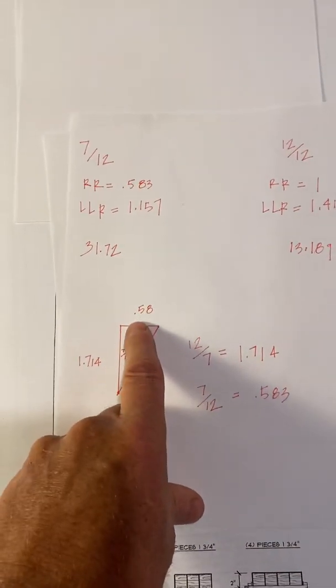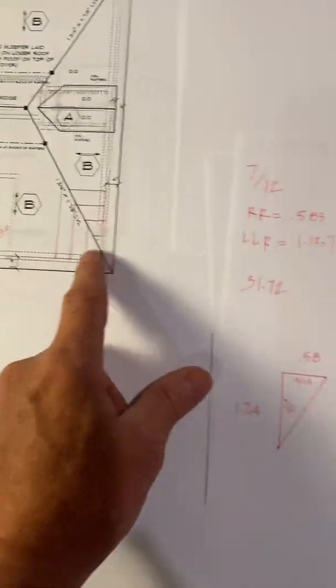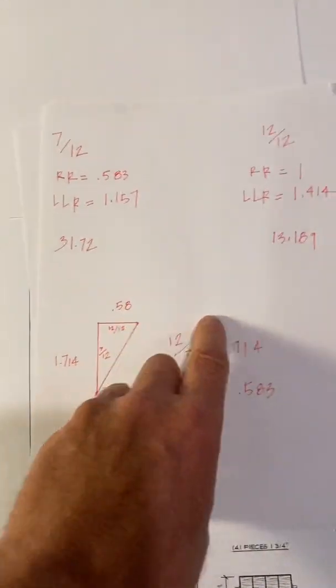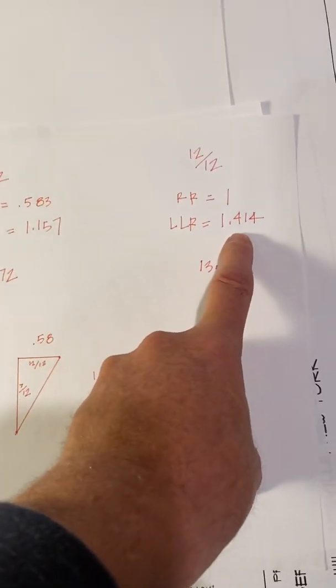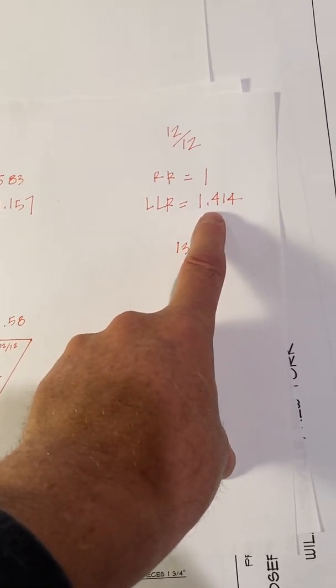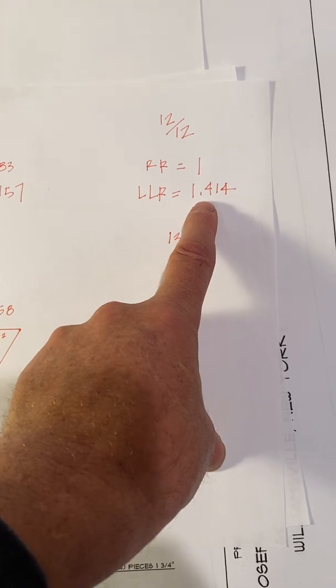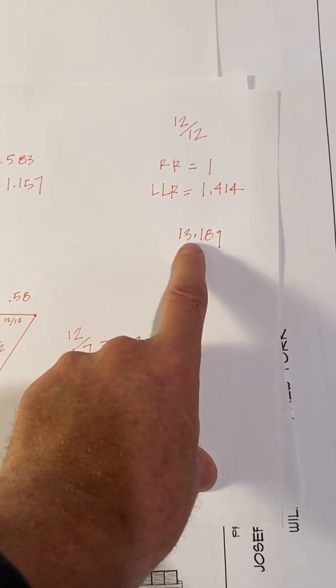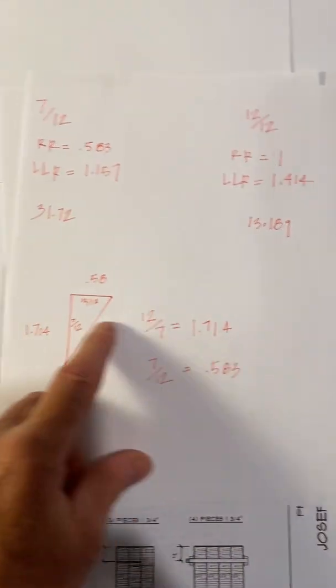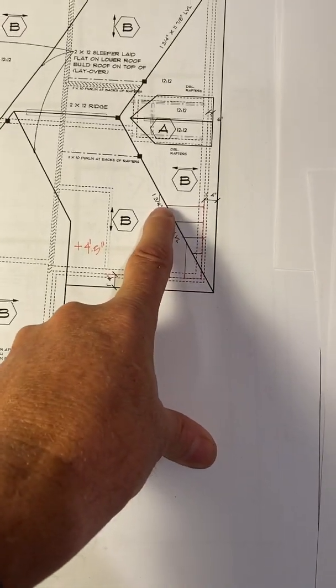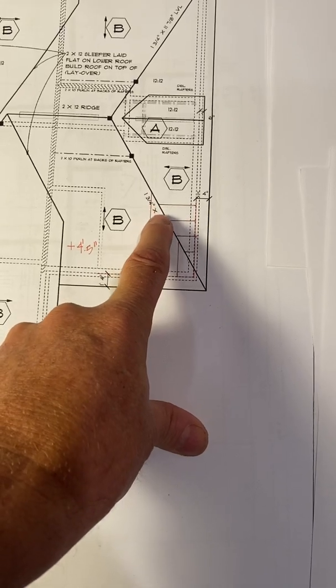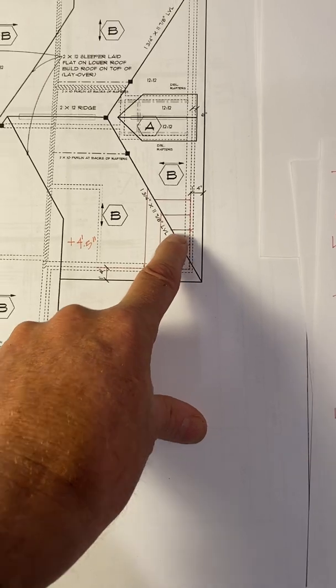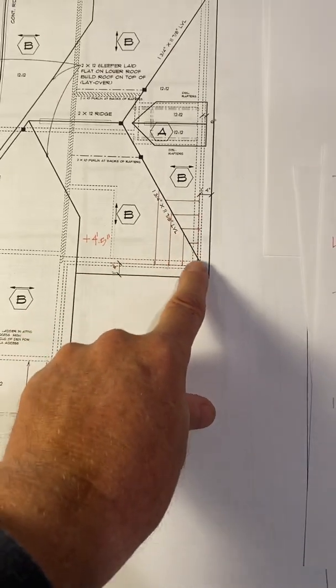With the 12-12 side, you take 16 inches on center times the smaller number times 0.58 and multiply it by the common rafter line length ratio for a 12-12 pitch, which is 1.414, and you get 13.189. Consecutively, each jack rafter is 13.189 longer than the previous on the steep side.